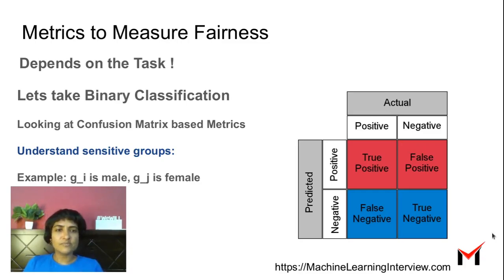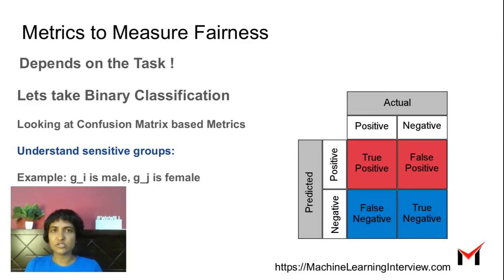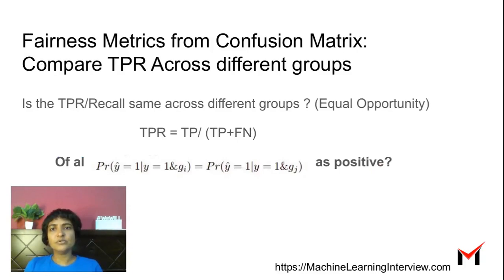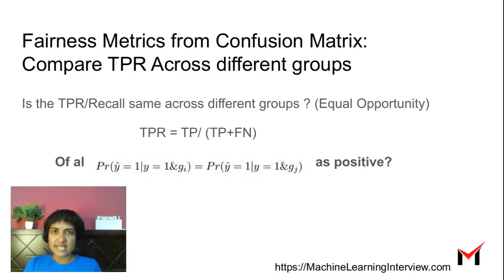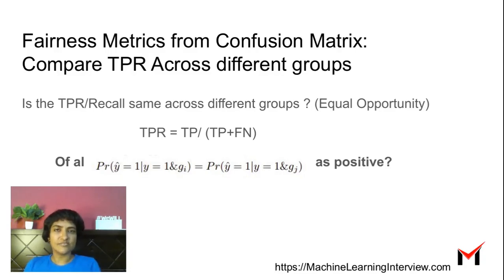What's the confusion matrix? The confusion matrix typically gives us the true positives, false positives, false negatives, and true negatives when we run a classifier. The first fairness metric is to compute the true positive rate across different groups. True positive rate is the number of true positives divided by the true positives plus false negatives — in other words, it's the recall, where the total number of positive examples is in the denominator. You're trying to find the ratio of examples correctly classified as positive compared to the total number of positives.